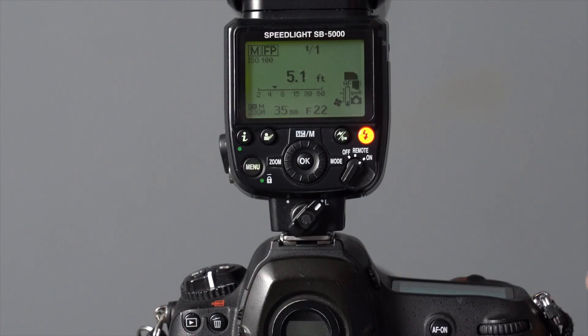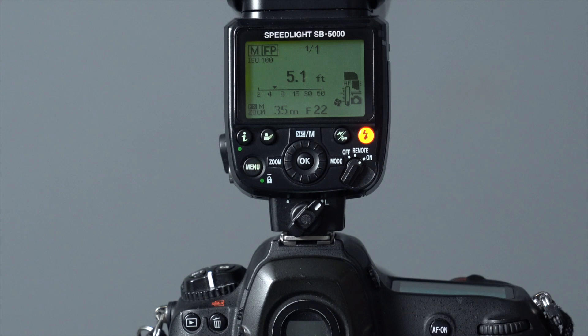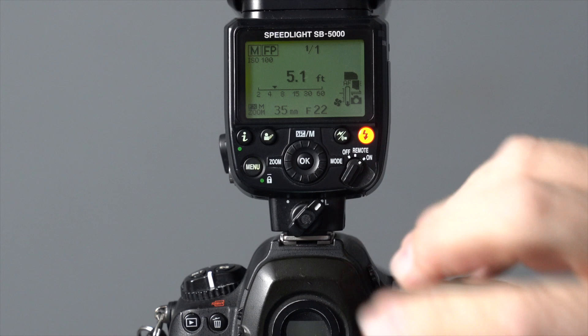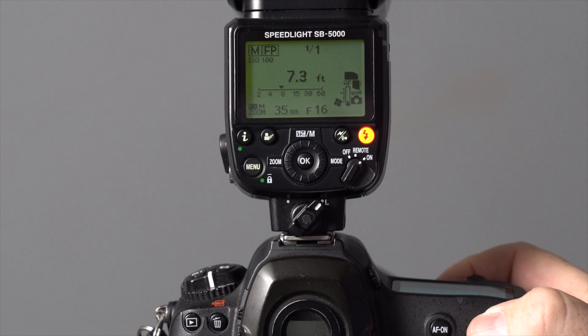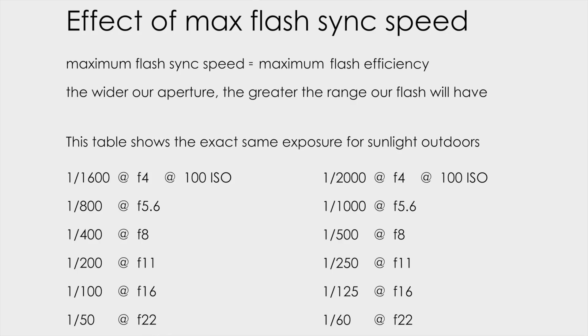Working with the Nikon D5, maximum sync speed is 1/250th. At 1/50th, f/22, full power, 35mm zoom, you have to be 5.1 feet from your subject — annoyingly close. If you photograph a group, you'll be that annoying photographer standing in front of everyone. f/22 is a ridiculous setting. A little better is 1/125th at f/16, giving you 7.3 feet — much better, but still not optimal. Remember, maximum sync speed gives us the greatest range because it allows the widest aperture while still in normal flash sync mode.